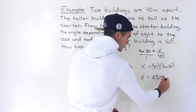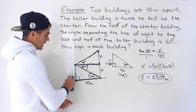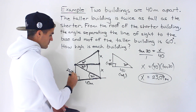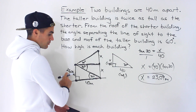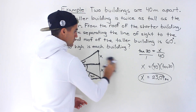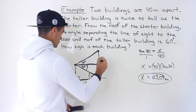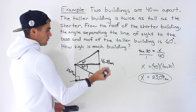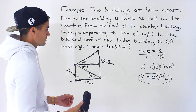So x = 23.09 meters is the height of the shorter building. Since the taller building is double the shorter, we multiply 23.09 by 2 to get 46.18 meters for the taller building. Those are our two answers.